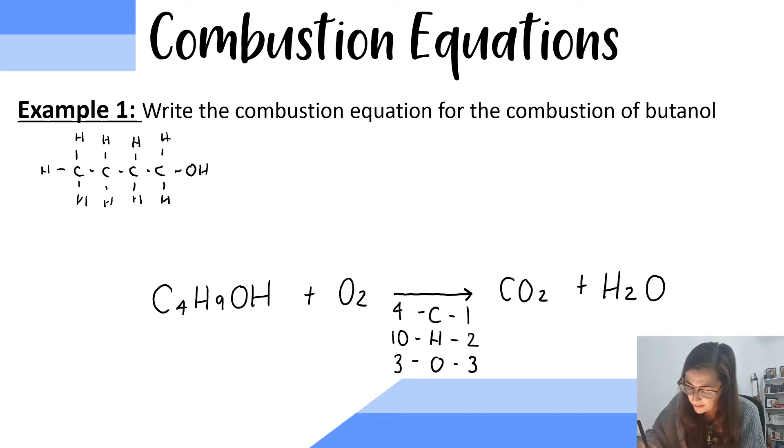And now I can start balancing my equation starting with carbon. I've got four on the left, so I need four here to have four on the right. It's changed my oxygens and I have eight oxygens in my CO2 by multiplying four and two. And one here, so for a total of nine. Balancing my hydrogens, I have ten on the left and so I need a five here. Five times two is ten to get ten on the right.